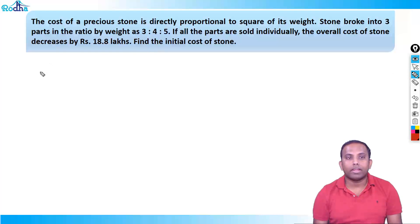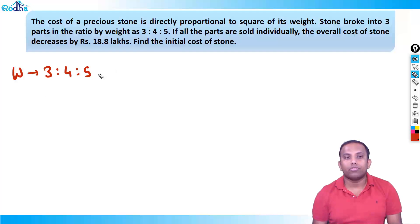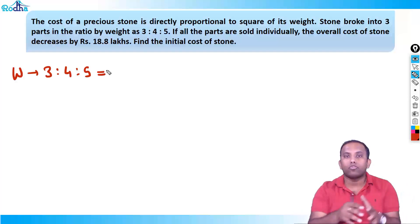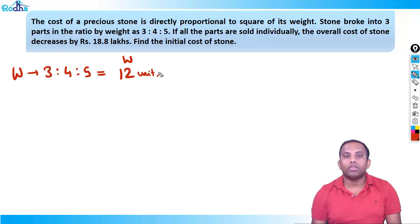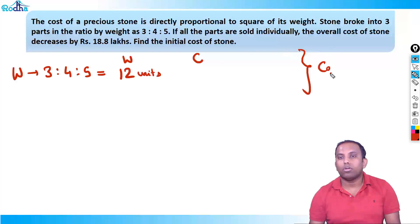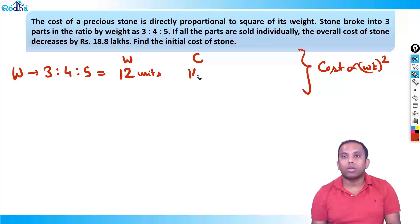The ratio of weights is given as 3:4:5. If I combine all the weight together, the broken parts when rejoined — 3+4+5 — make a stone of weight 12 units. So the weight of the stone is 12 units. Since cost is directly proportional to the square of its weight, cost becomes 12² = 144 units.